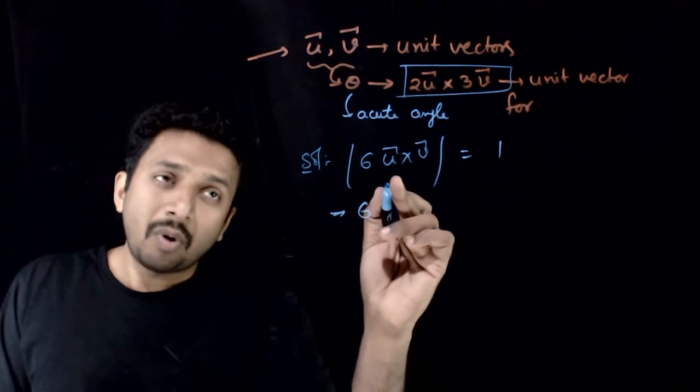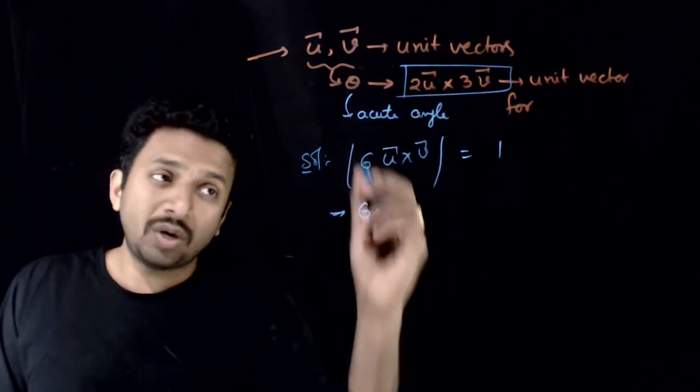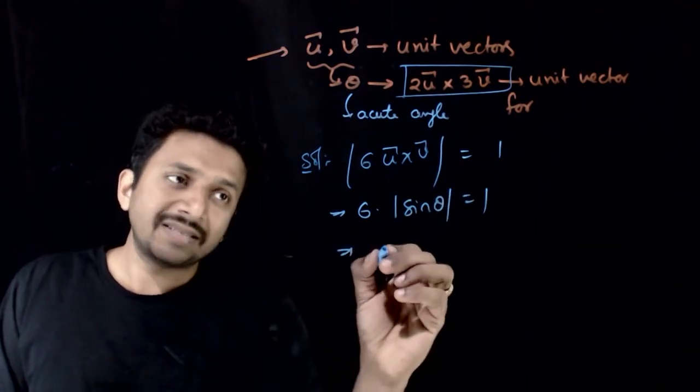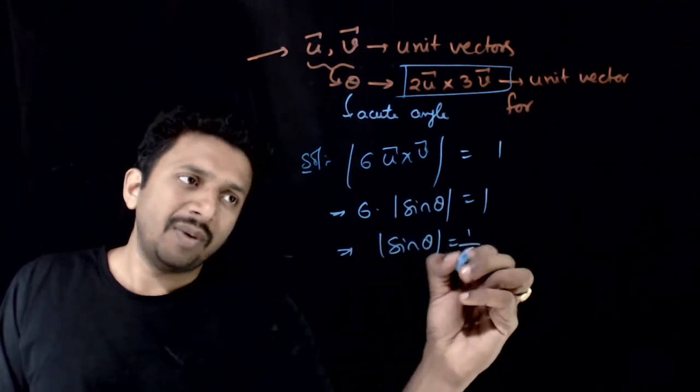This implies 6 times mod of u cross v is mod u which is 1 into mod v which is 1 into sin theta. Mod sin theta is equal to 1. This implies sin theta is equal to 1 by 6.